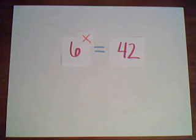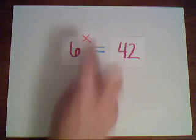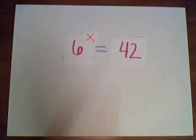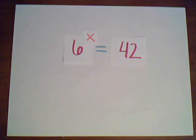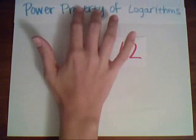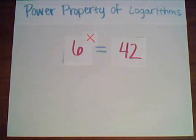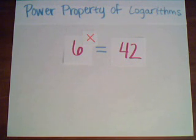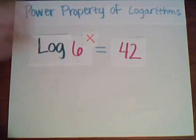How do we solve an exponential equation when the unknown is in the exponent, like in this equation? We use the power property of logarithms, which says that if we take the log of both sides, we can move the exponent down — which means we put a log in front of both numbers, taking the log of both sides.